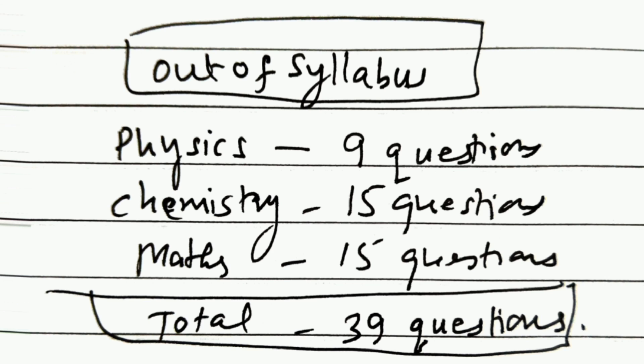So they said that physics, 9 questions are considered as out of syllabus. In chemistry, 15 questions are out of syllabus, and in math, 15 questions are out of syllabus. So if you add total, 39 questions are now considered as out of syllabus and marks will not be provided for these questions.